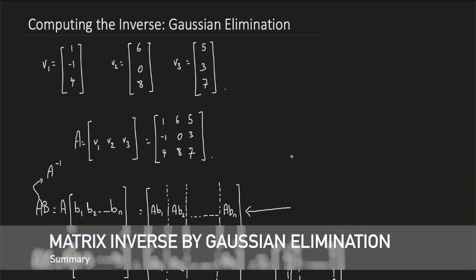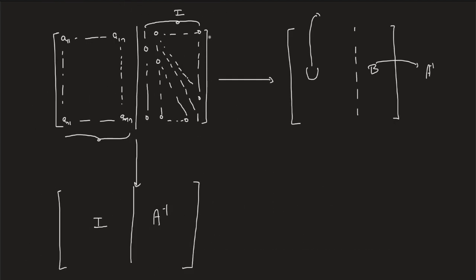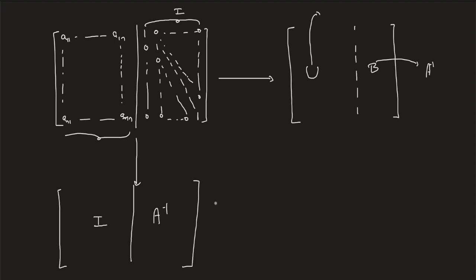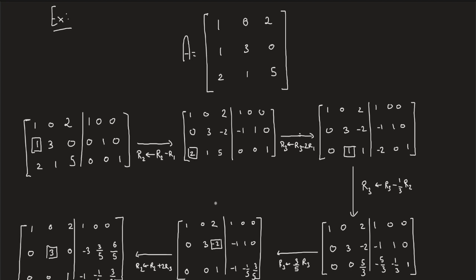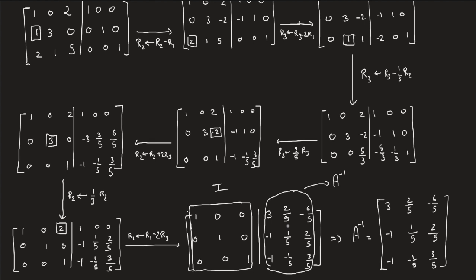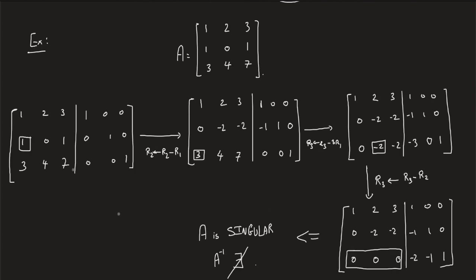In this lecture, we talked about how to invert a matrix using Gaussian elimination. To compute the inverse, we attach the n columns of the identity matrix to form an augmented matrix [A|I], then reduce the coefficient matrix to form an identity on the left-hand side, obtaining A inverse on the right. There are two cases: either A is non-singular and the inverse appears on the right, or you encounter an all-zero row, meaning A is singular and A inverse does not exist.